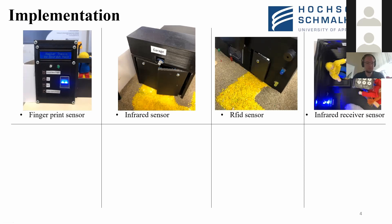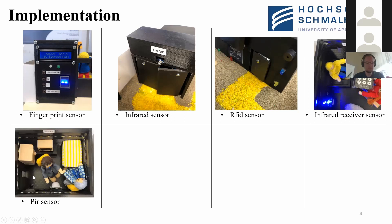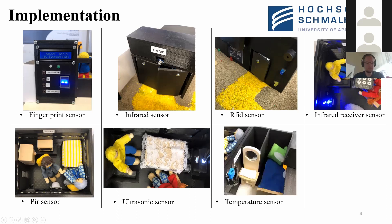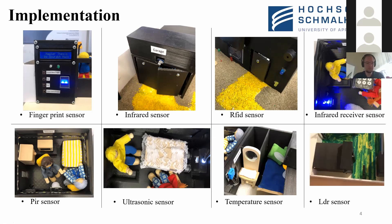Fifth, I have a PIR sensor installed in the kitchen where the lights automatically turn on detecting motion of a person inside. Sixth, I have an ultrasonic sensor where, as you can see, the lights automatically turn on when a person is sitting in front of it. Seventh, I have a temperature sensor placed inside the room — when the temperature goes above 30 degrees Celsius the fan turns on automatically, and when it goes below 30 degrees Celsius the fan goes off.